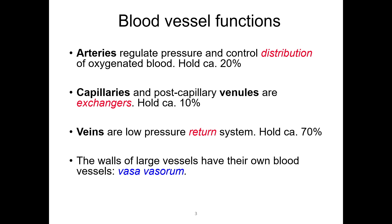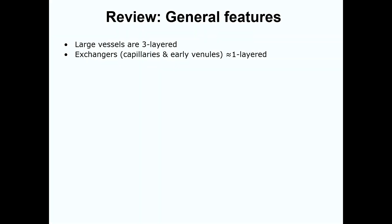There are variations in blood pressure in different parts of the circulatory system, and each vessel has specific and different functions. Thus, the structures and organizations of each type of vessel are dictated by these different functional demands, just as in the heart. First we'll briefly review some basic features of vessels, and then move on to the histology and functions of arteries.